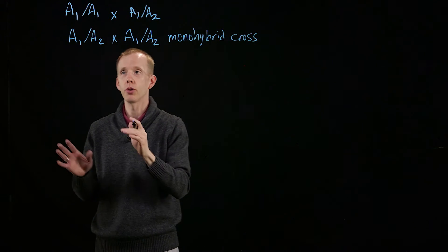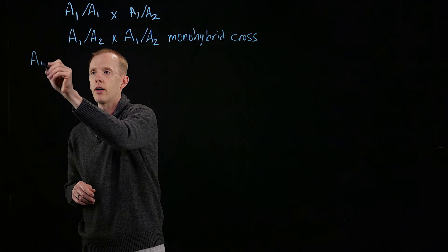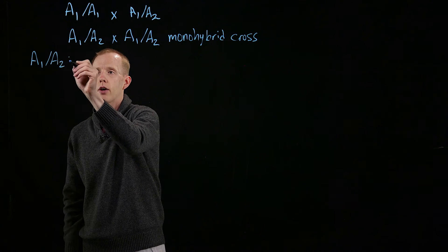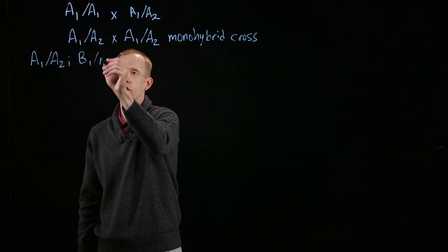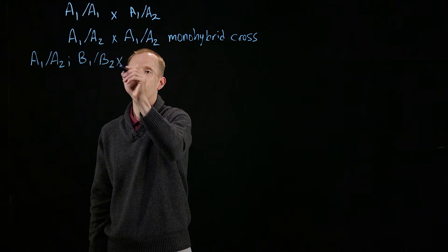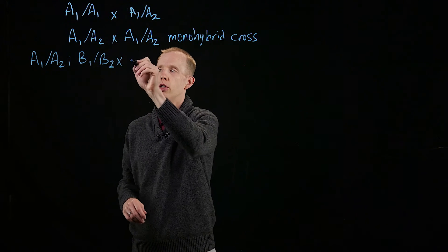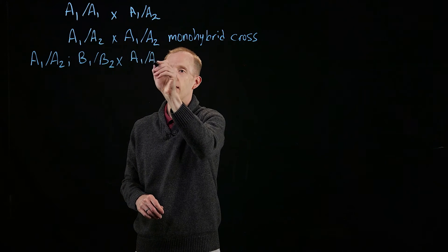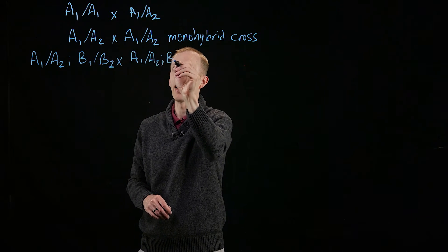If we're looking at two genes and two alleles, as we've seen, an individual that's heterozygous at gene A and also at gene B, if we cross that individual to another individual of the same genotype, that's the dihybrid cross.